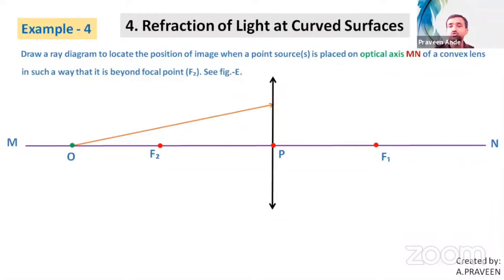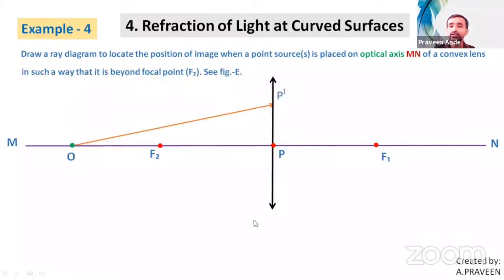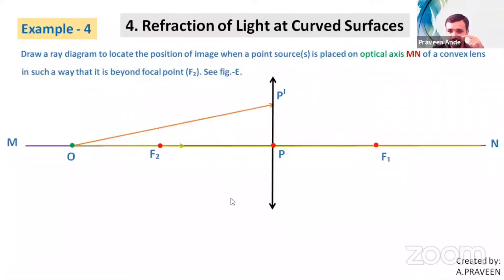What we have to do here is imagine a principal axis. The actual principal axis MN is already given, but we also draw a line passing through the optic center of the lens that is parallel to the given light ray OP'. This is called the imaginary principal axis. A ray passing through the optic center of the lens — is there any change in its behavior after refraction? No, it remains undeviated along that axis.